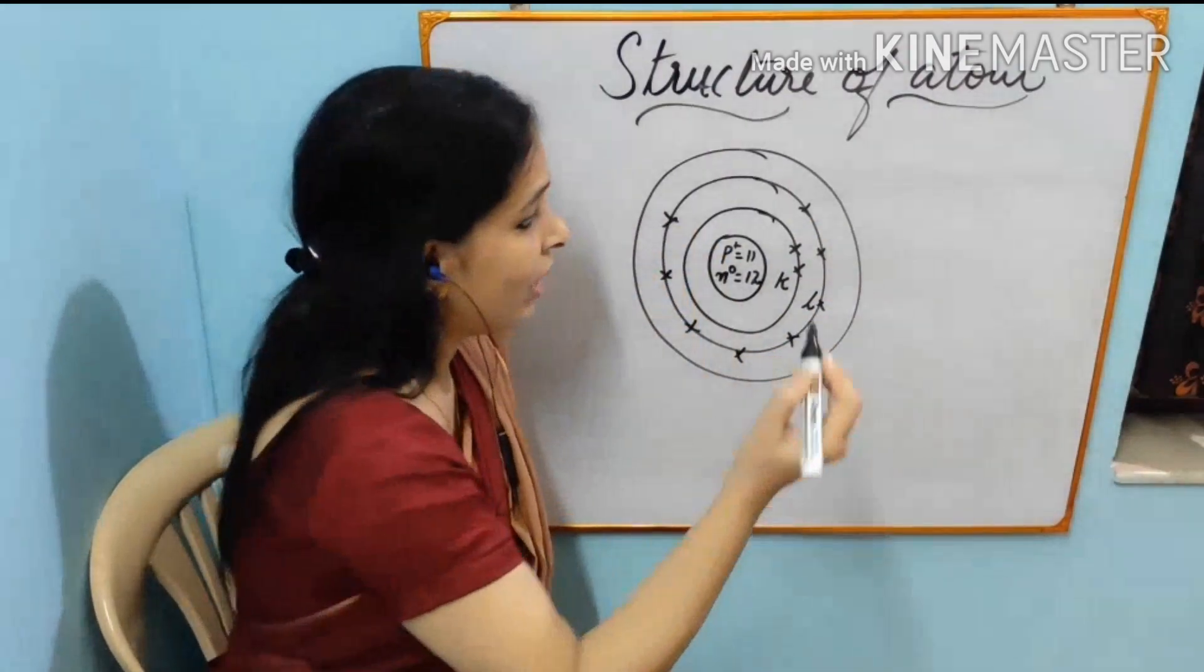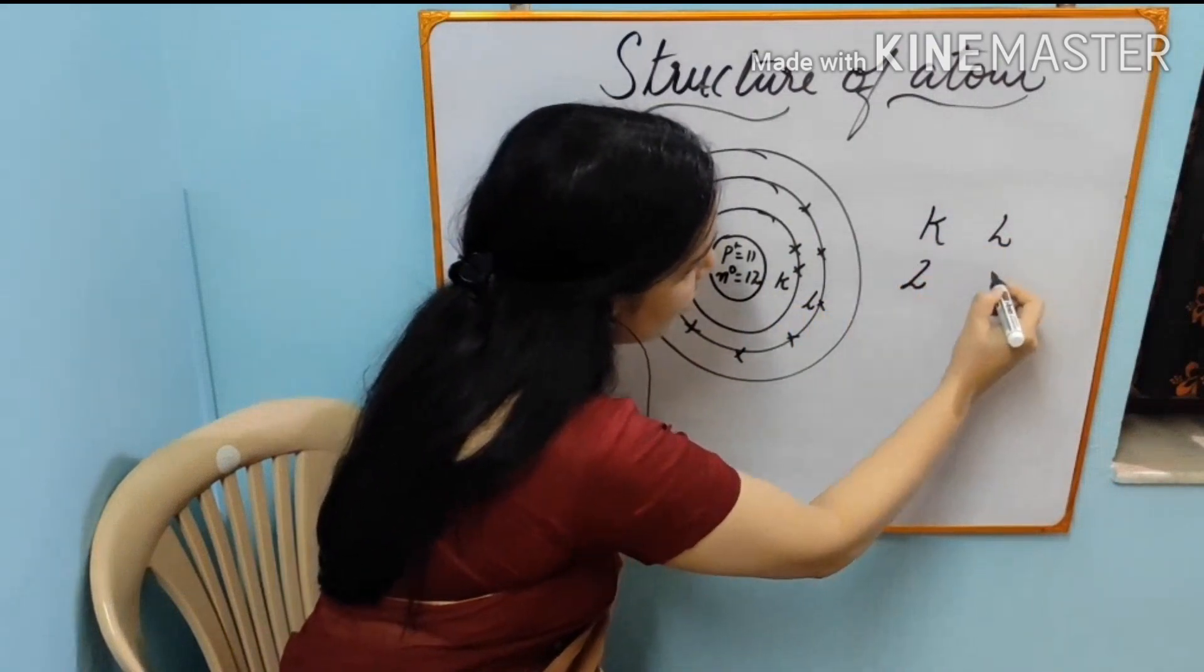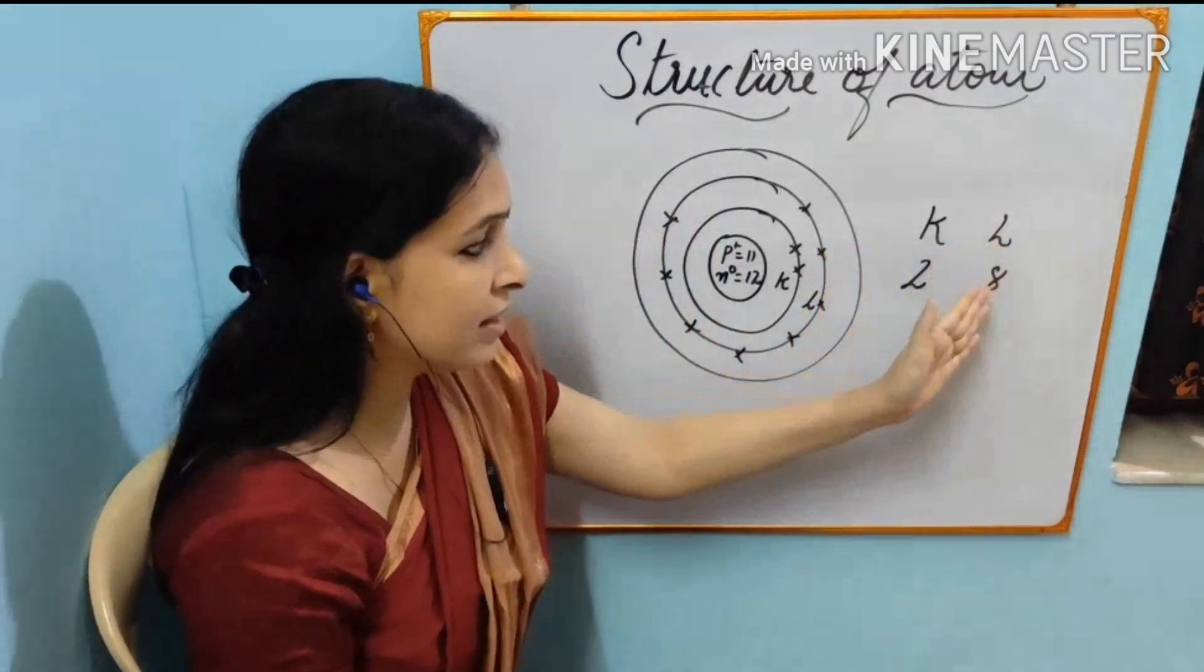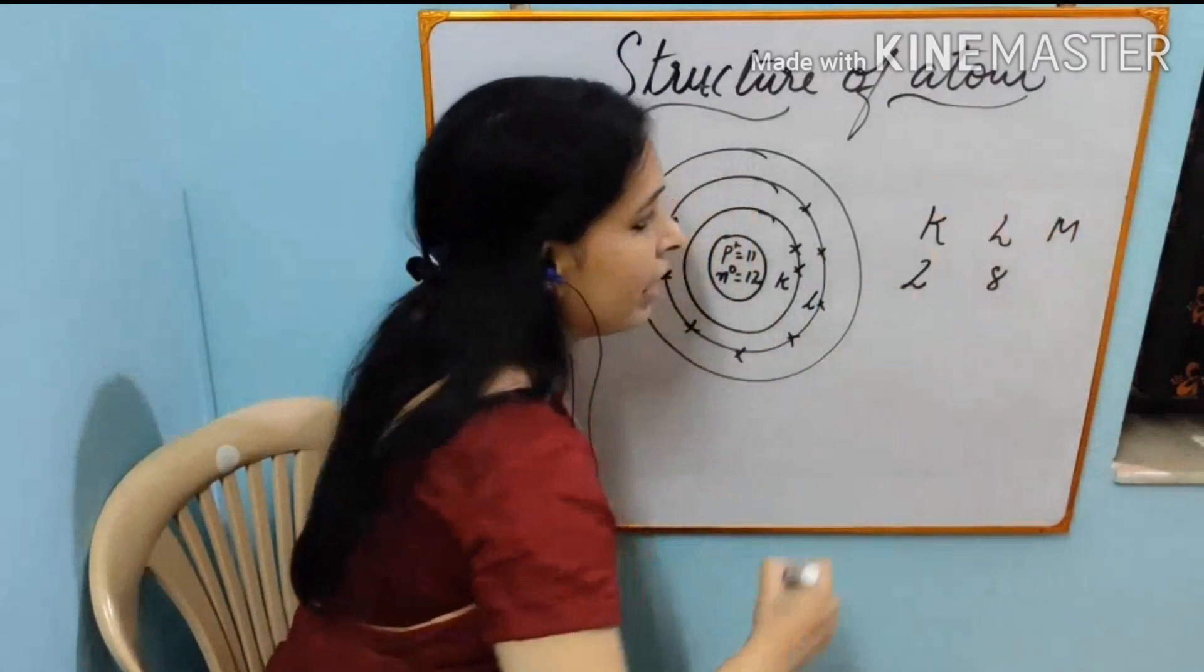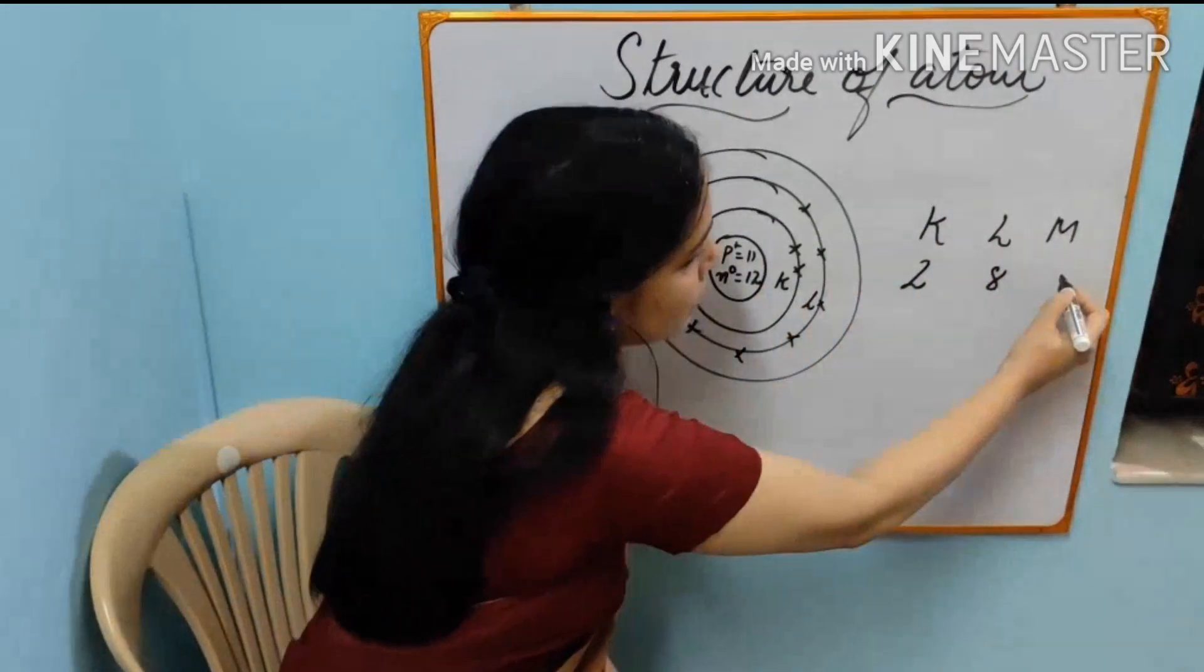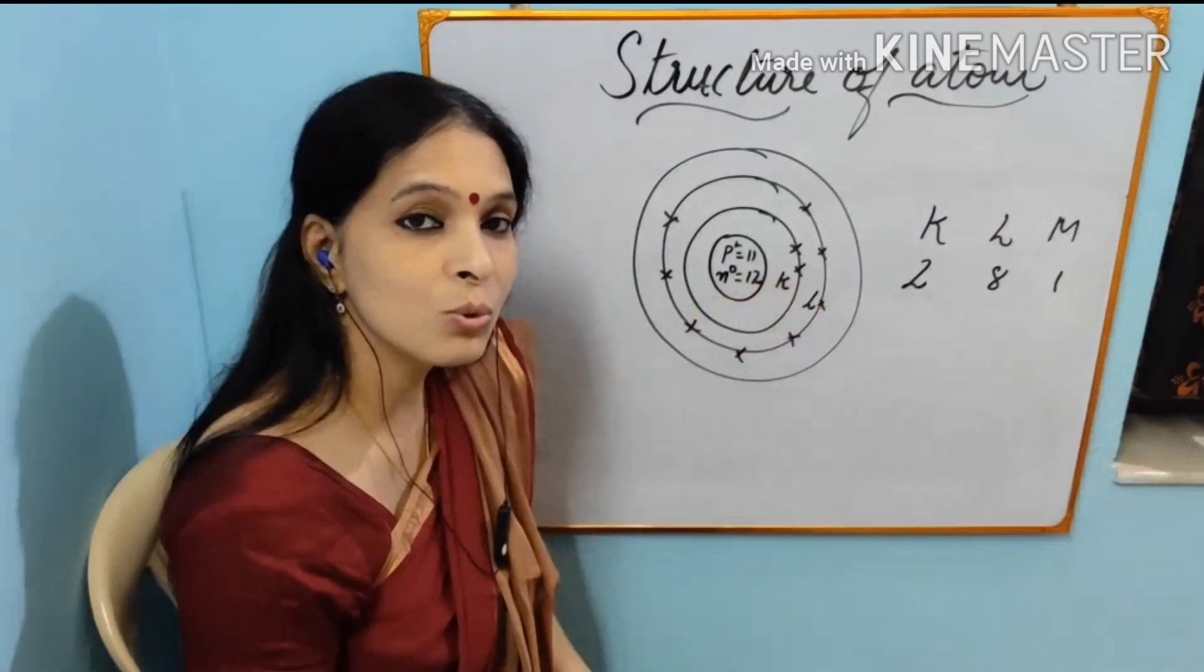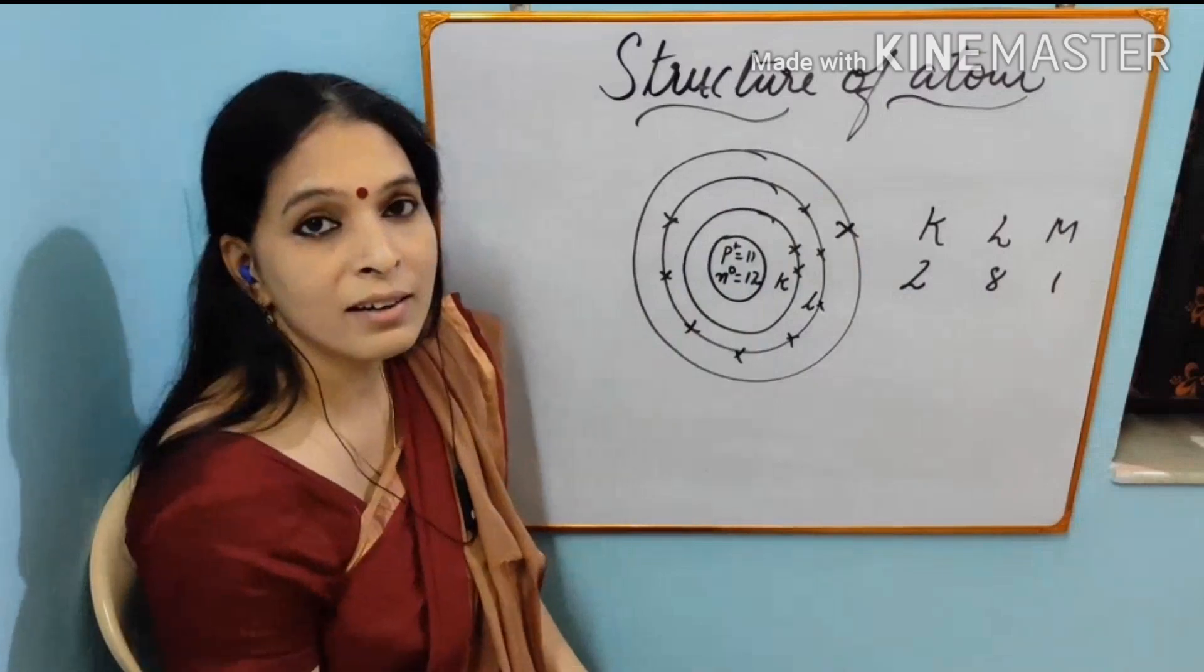And now I will draw here K shell, L shell. In K shell 2 electrons are there. L shell 8 electrons are there. Maximum capacity of K is 2. L is 8. And maximum capacity of the next shell M also is 8. But now we have only one more electron. That means 2 plus 8, 10, 10 plus 1, 11. 11 electrons are present in sodium. So this is the way electrons are arranged in sodium.